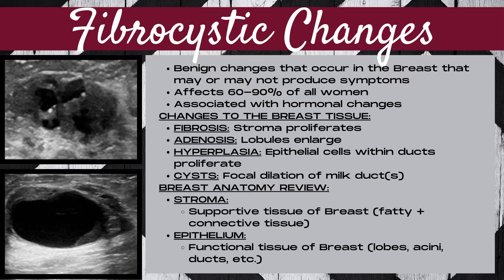There are four changes that are occurring to the breast tissue. Number one is fibrosis, and this is where the stroma proliferates. Change number two is adenosis, and this is where the lobules of the breast enlarge. Change number three is hyperplasia, and this is where the epithelial cells within the ducts proliferate.